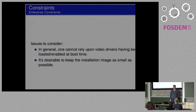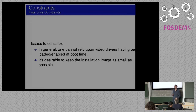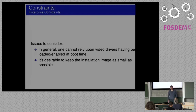A couple of constraints for this exercise: we cannot rely on any particular video drivers being available, because all systems have different video systems, so we can't say this installer only works if you've got an SGI or ATI card. We've got to use the lowest common denominator so it will be there on a pretty much bare kernel. And we want to keep the installation image as small as possible because it has to fit on a USB device — and although they're quite large these days, they're not infinite.